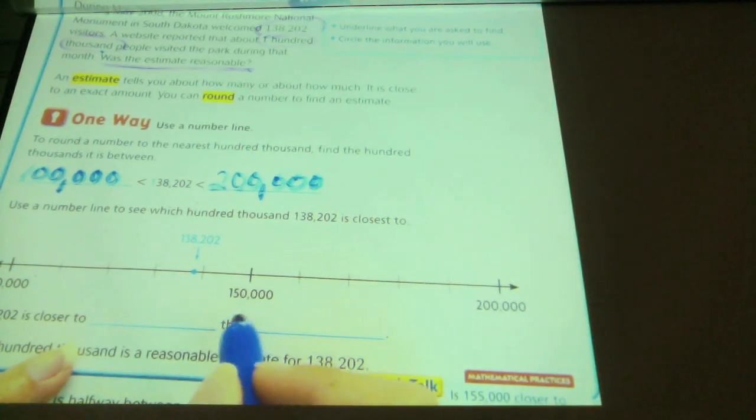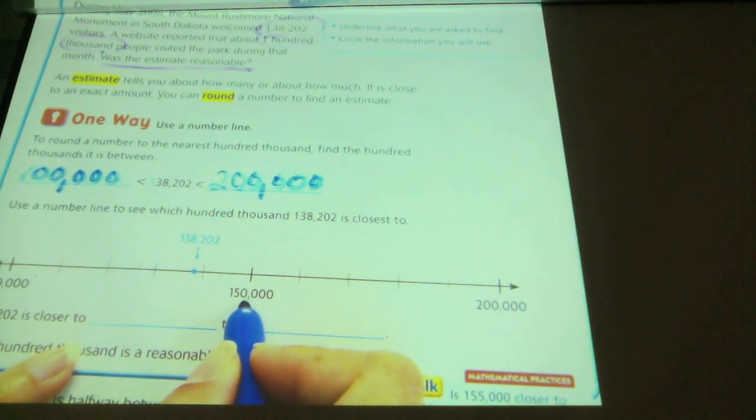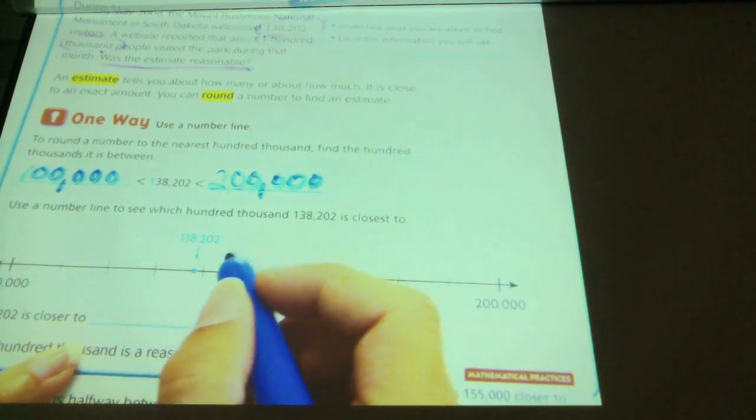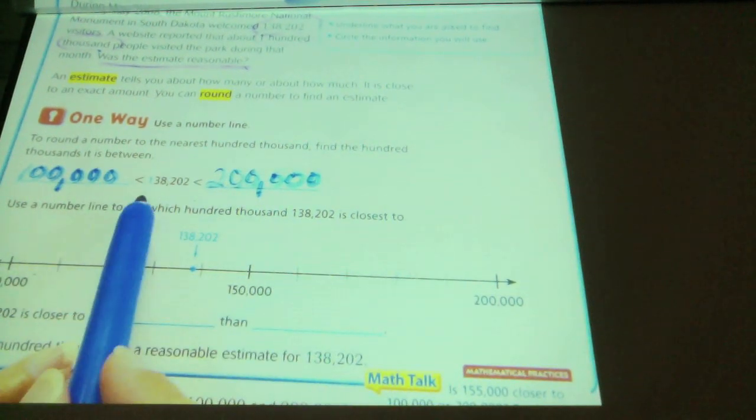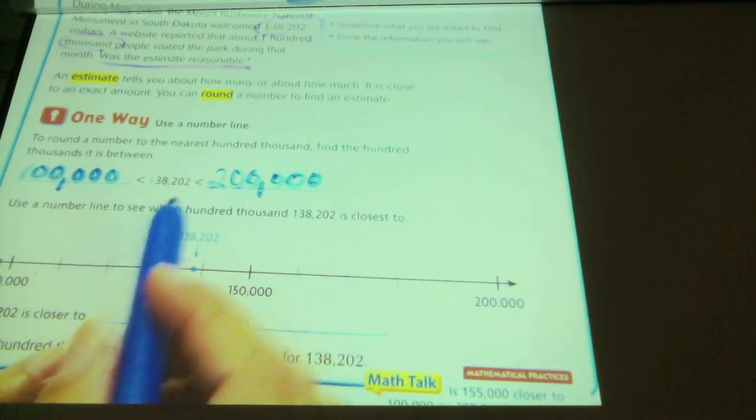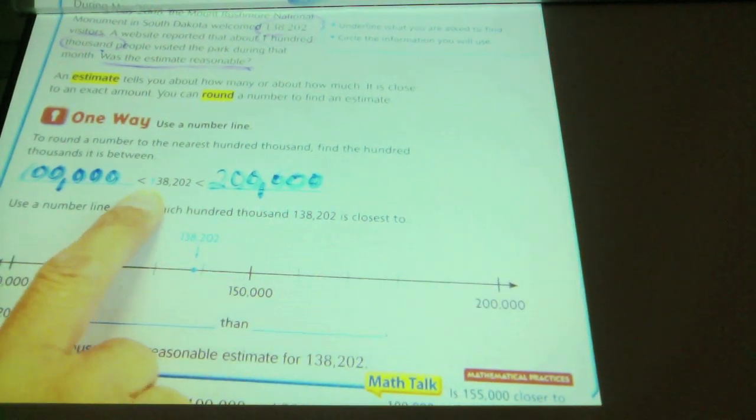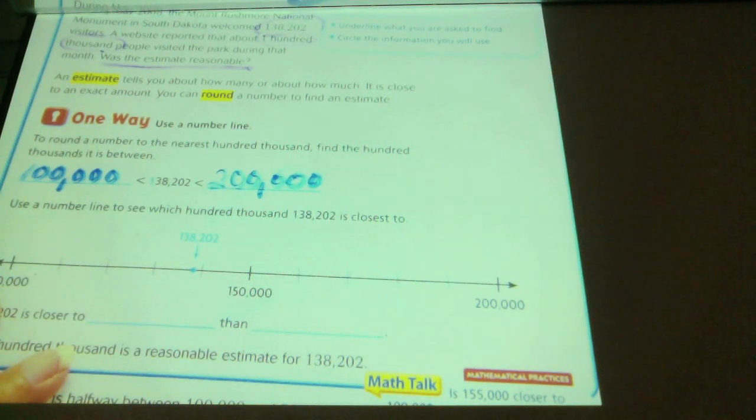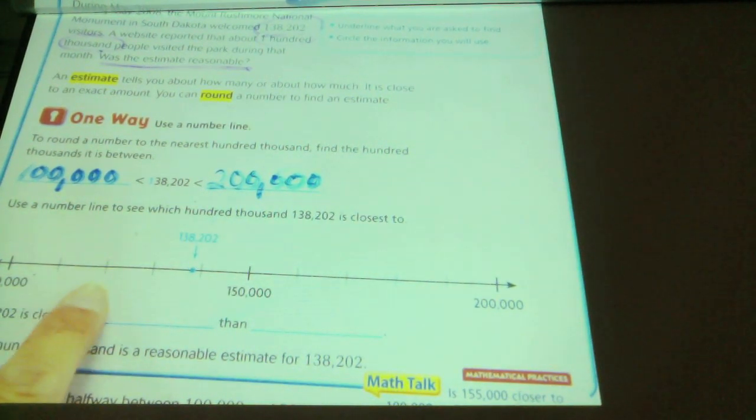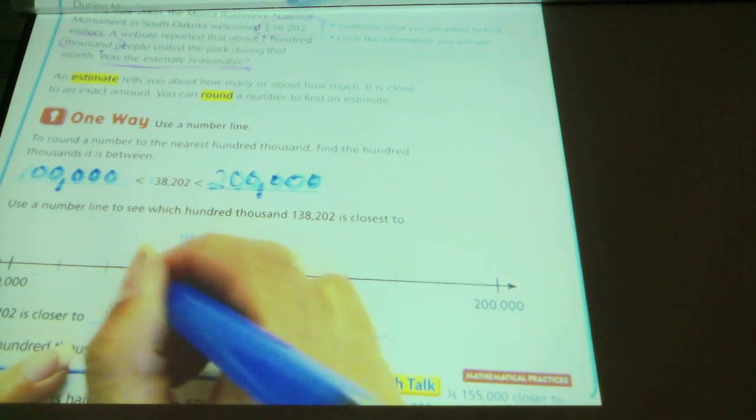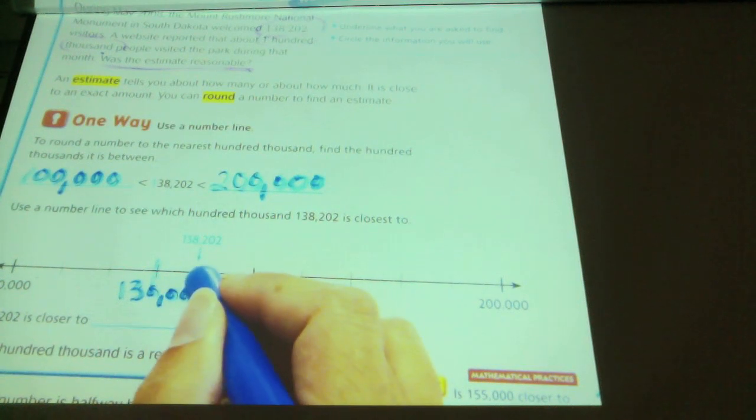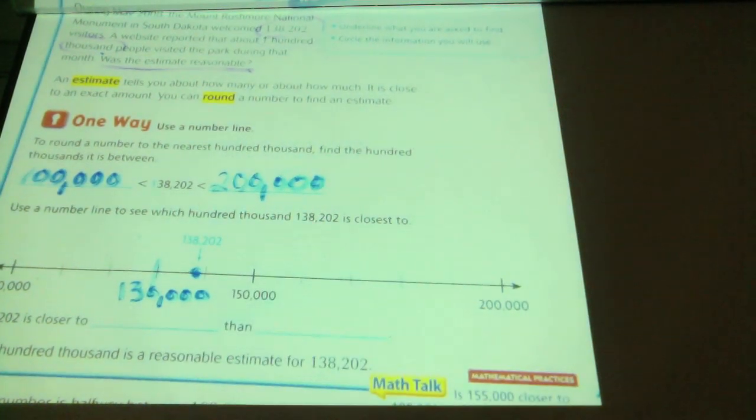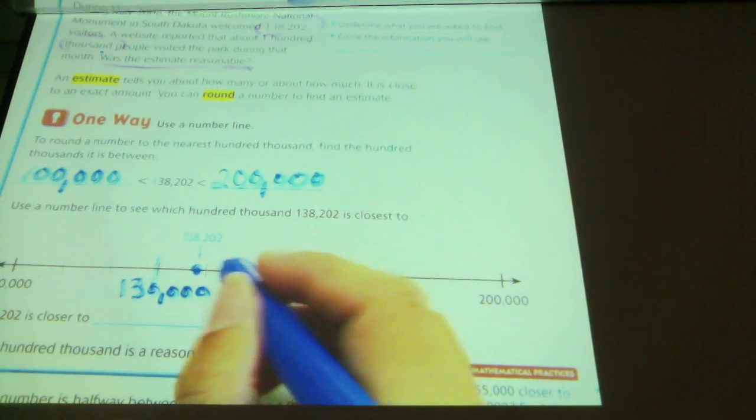So, going back to here. So we have the halfway point. It's the fifty thousand, and then we're going to plot one hundred and thirty-eight thousand, two hundred and two. So this is a hundred and thirty thousand. A hundred thousand, a hundred and ten, a hundred and twenty, a hundred and thirty. So this marker here is a hundred and thirty thousand. We know that it's about, a hundred and thirty-eight thousand is about there. You don't have to plot it perfectly, it's just an estimate.